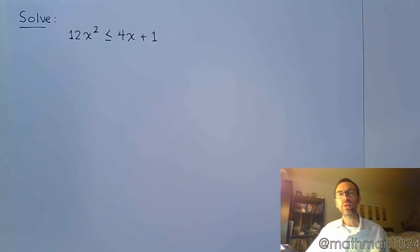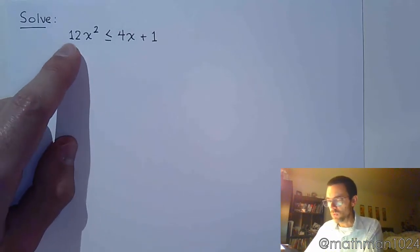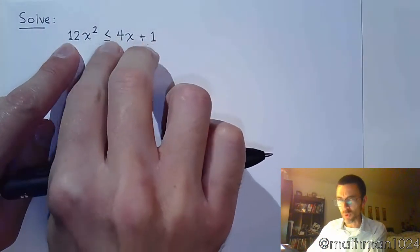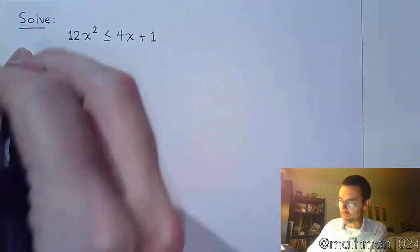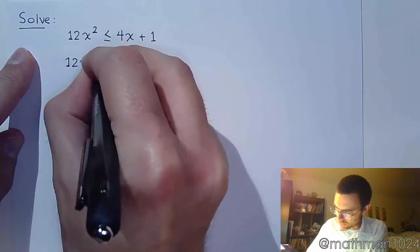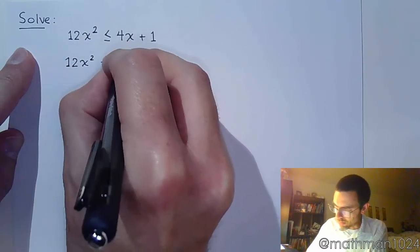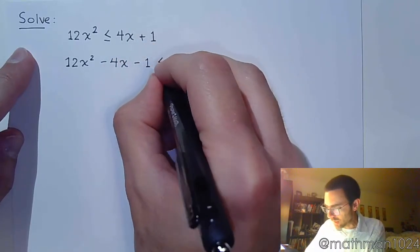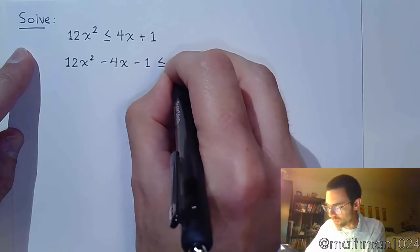When I do that, I also want to make sure that I leave my lead coefficient positive. So this guy's already positive, so what I want to do is move these two terms over to the left side. So I just need to subtract them over, so 12x² - 4x - 1 is less than or equal to 0.